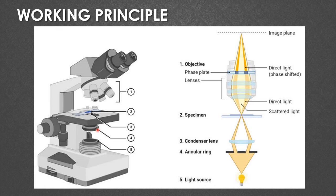The second special part is the phase plate or diffraction plate, which is present above the objective lens — that is, in between the objective lens and the ocular lens or eyepiece. So the two special structures are: the annular ring present below the condenser, and the phase plate or diffraction plate present in between the objective lens and the eyepiece. The light from the light source is directed through the specialized annular diaphragm or annular ring, and that light illuminates the specimen through the condenser.